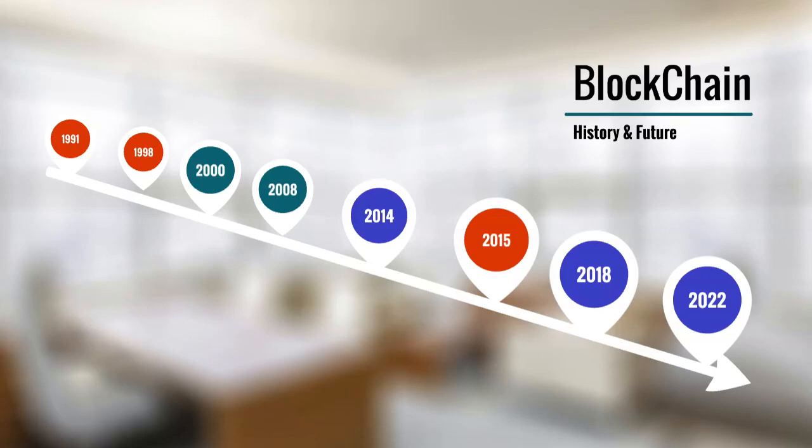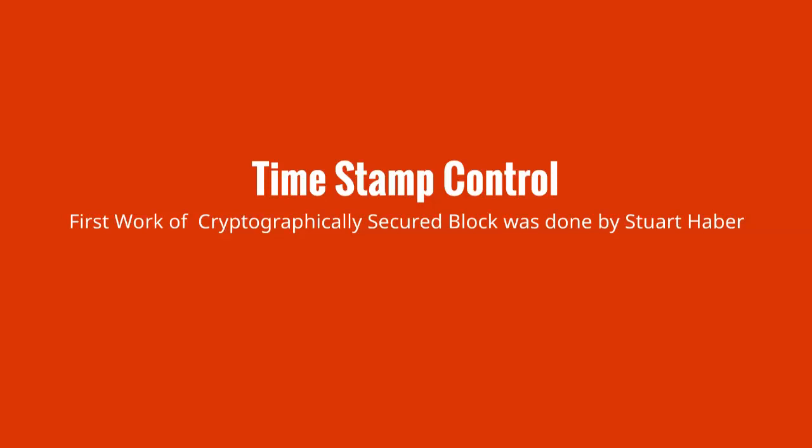History takes us back to the 90s — this is not something very new to be afraid of. Remember that blockchain is an amalgamation of things which were already there. In 1991, the first work on cryptographically secured blocks was done, meaning cryptographic techniques were used to make a secured block to store data. The first work on timestamp control was also done in 1991 by Stuart Harbour.